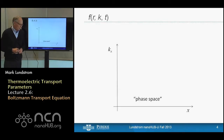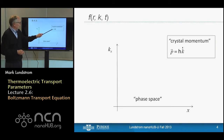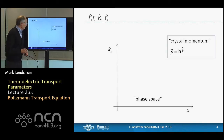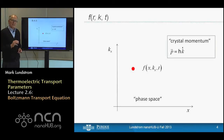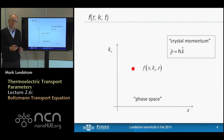There are five topics in this lecture. First, I'd like to explain what phase space is — that's a key concept in the Boltzmann equation. Then we'll present a simple derivation of the Boltzmann transport equation, talk about how we solve it, show how you can use that solution to derive the four thermoelectric transport coefficients, and finally discuss how this derivation from the Boltzmann equation relates to our derivation from the Landauer approach.